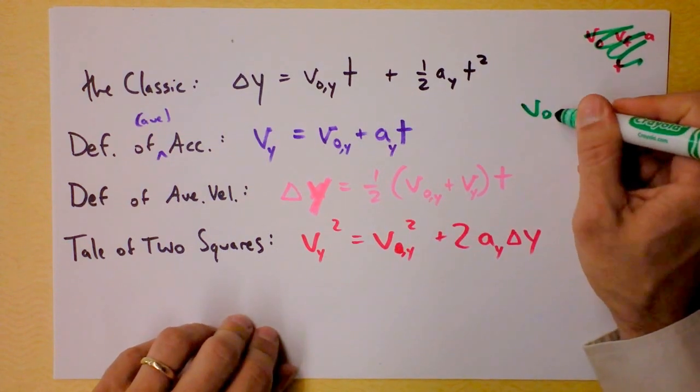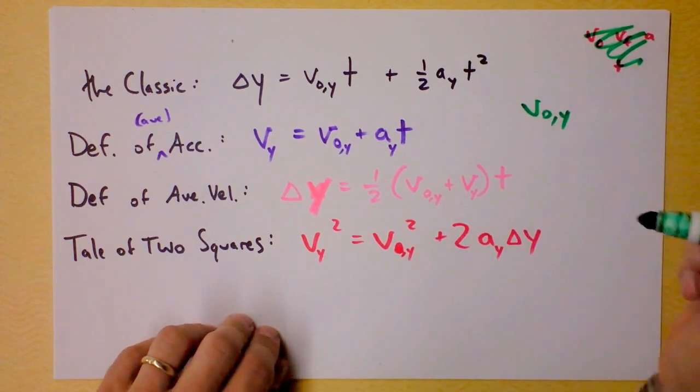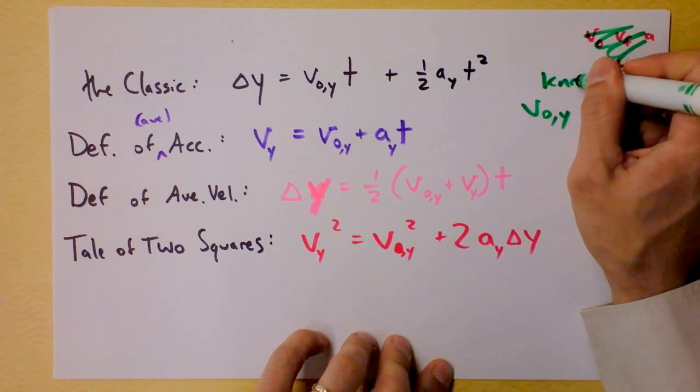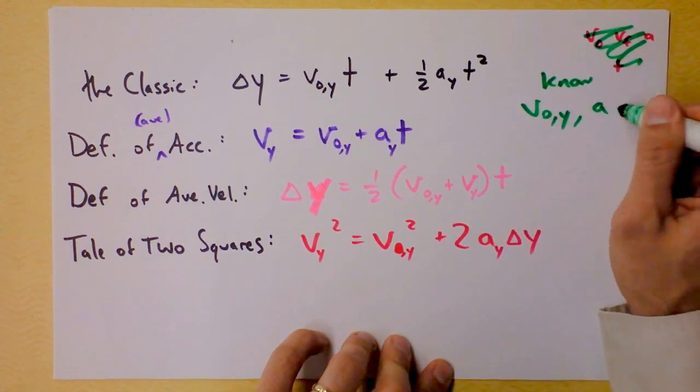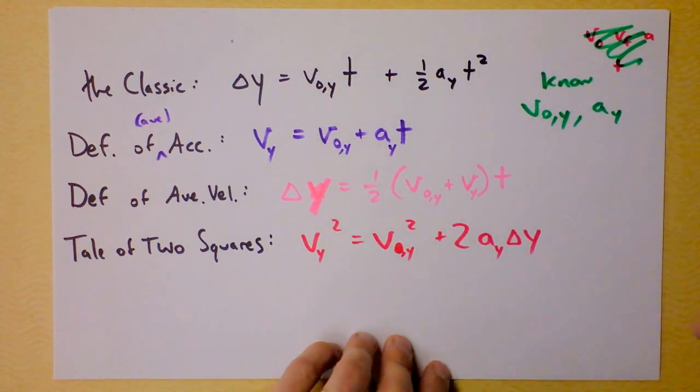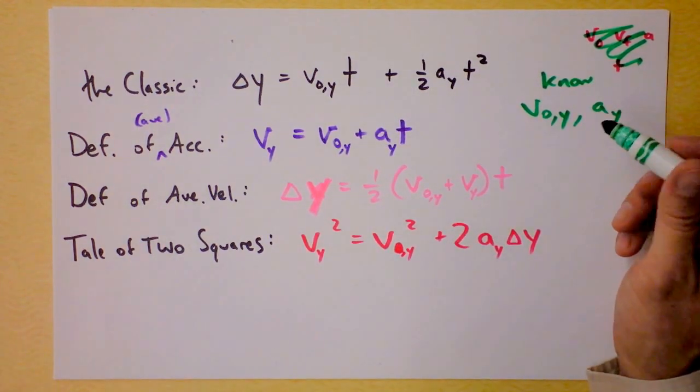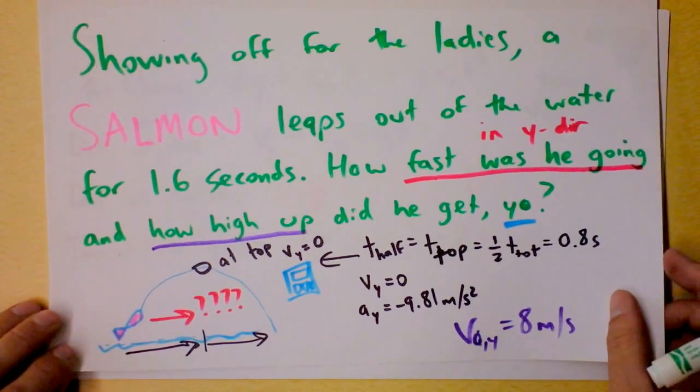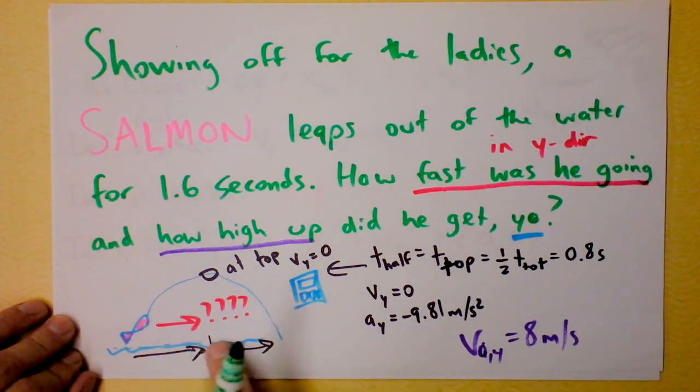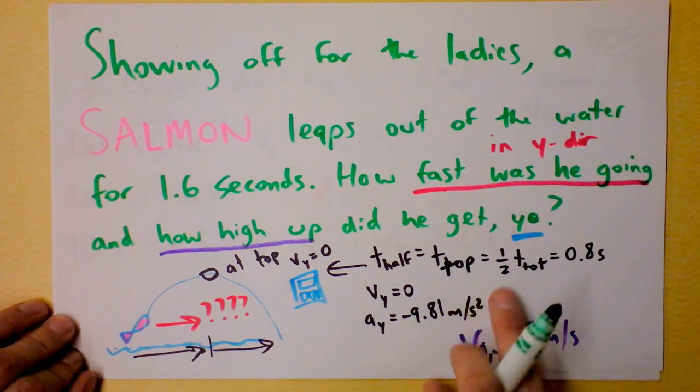We know the initial velocity in the y direction, we just found that, right? And we know the acceleration in the y direction, and do we know the time? Do we know when we want to know how high up the salmon is? I think that we do.